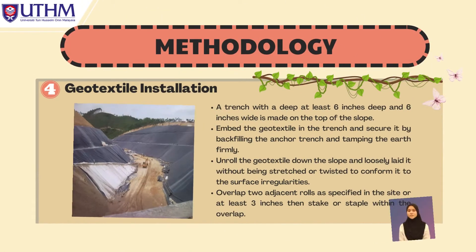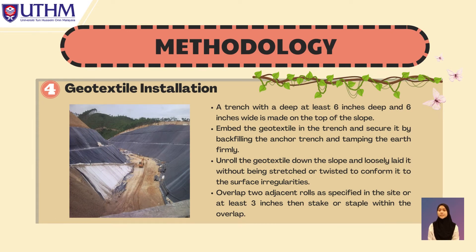Fourth, to install a geotextile, a trench at least 6 inches deep and 6 inches wide is made on the top of the slope. Embed the geotextile in the trench and secure it by backfilling the anchor trench and tamping the earth firmly. Unroll the geotextile down the slope and loosely lay it without being stretched or twisted to conform to surface irregularities. Ensure to overlap two adjacent rolls as specified on-site or at least 3 inches, then stitch or staple within the overlap.